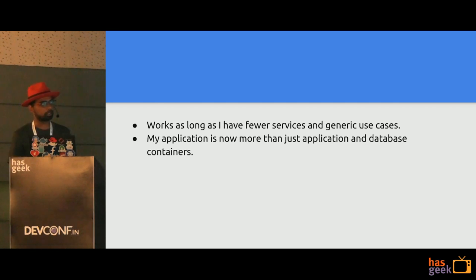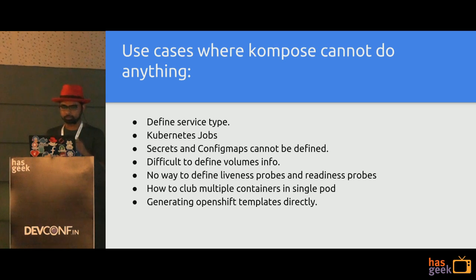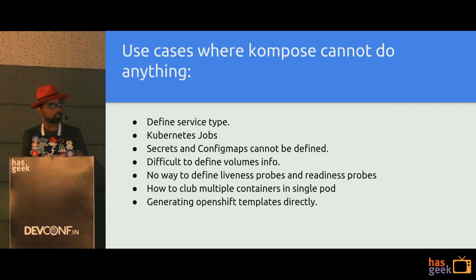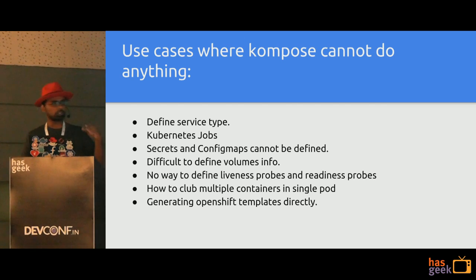But my application is not just two or three services — it's grown into many things. That's where Compose starts going bad because it assumes a lot of things. You cannot have service types defined, you cannot do Kubernetes jobs, and secrets and ConfigMaps are hard to get from Docker Compose. The volumes info, as I said, is just 100 MB — I'll have to go manually and edit that for the volume size, plus liveness and readiness probes.